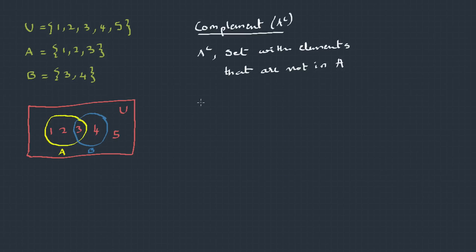Complement. A complement is a set with elements that are not in A. So basically it's removing the elements of A from the universal set. We can think A complement as U minus A. That's x such that x belongs to U and x does not belong to A. So here A complement will be 4 and 5.